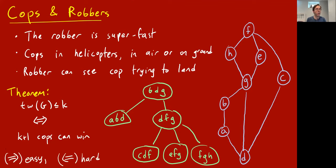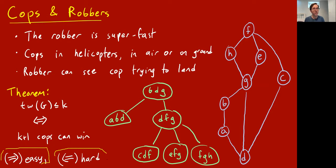One direction of this proof is easy: if the tree width is at most k, then k plus one cops can win by using the tree decomposition as a strategy. The other direction — proved by Robertson and Seymour — that if k plus one cops can win then the graph has tree width at most k, is much harder and takes a paper.